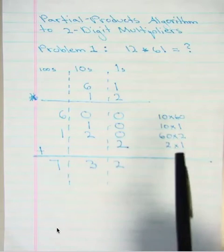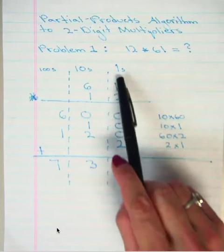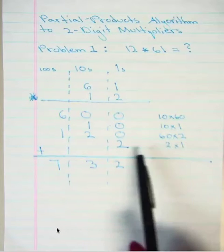And then the last digits to multiply would be 2 times 1. So you're just multiplying the ones place. 2 times 1 equals 2.